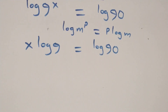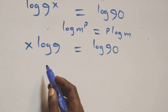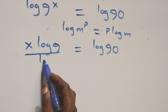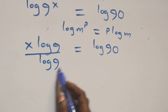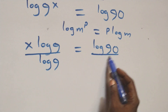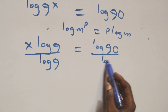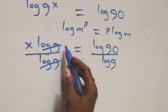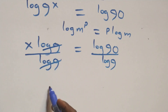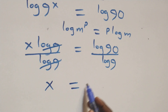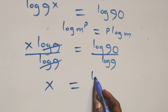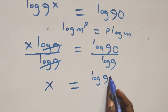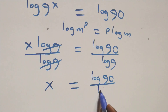The next step is to divide both sides by log(9). Dividing this side by log(9) and also this side by log(9): the log(9) terms cancel each other, and we have x left, which is equal to log(90) over log(9).